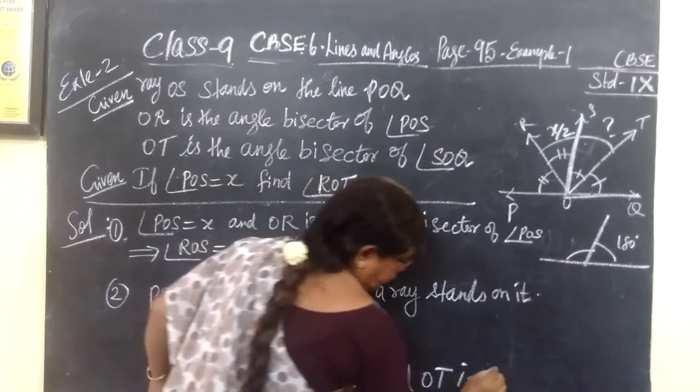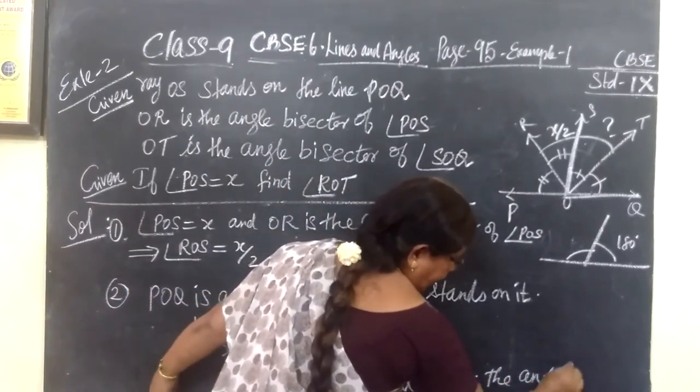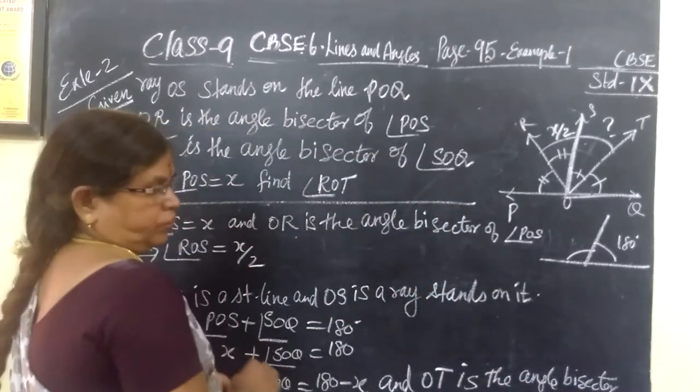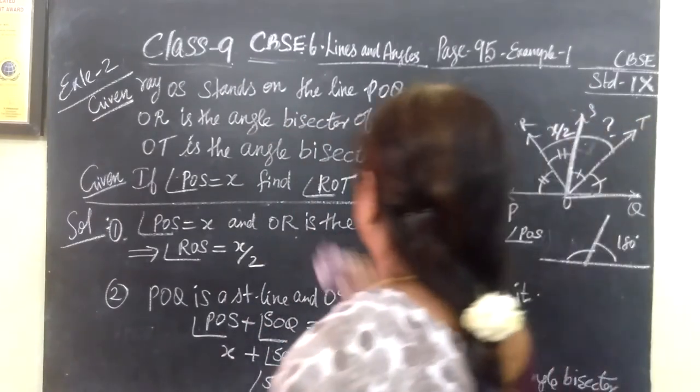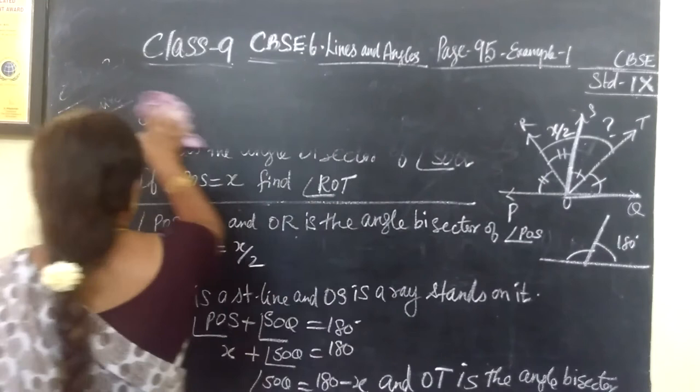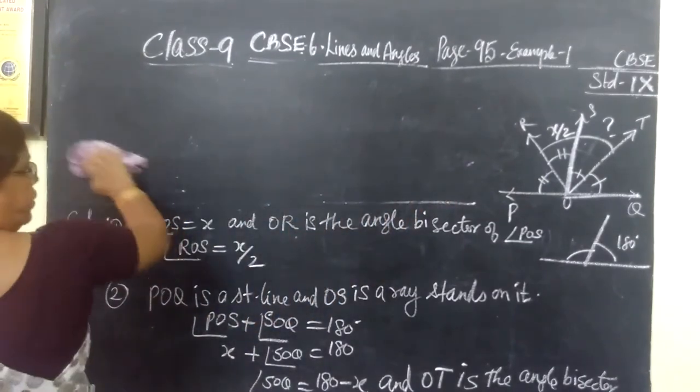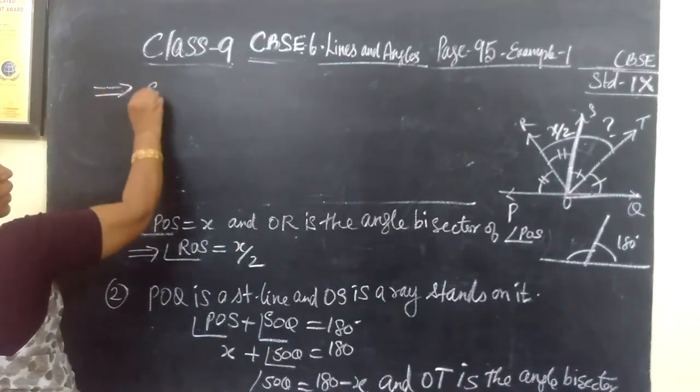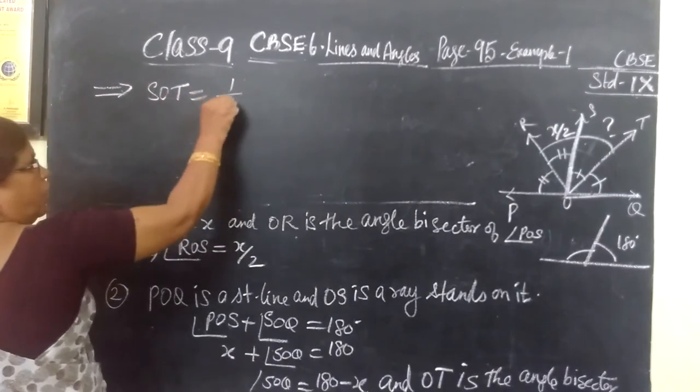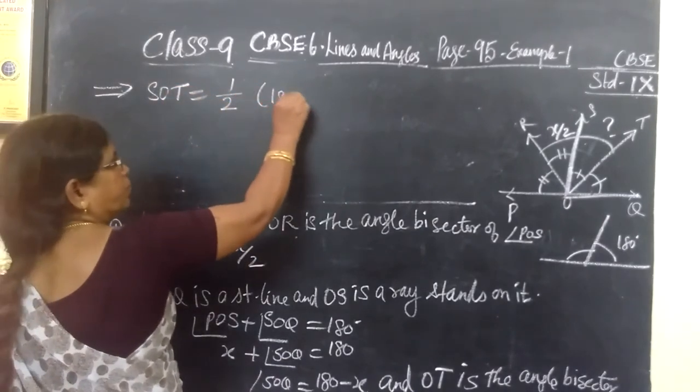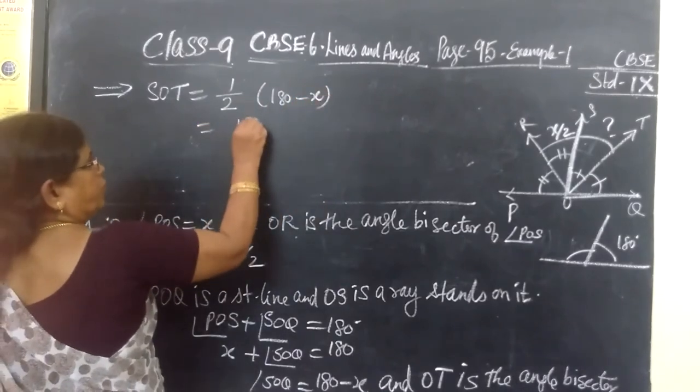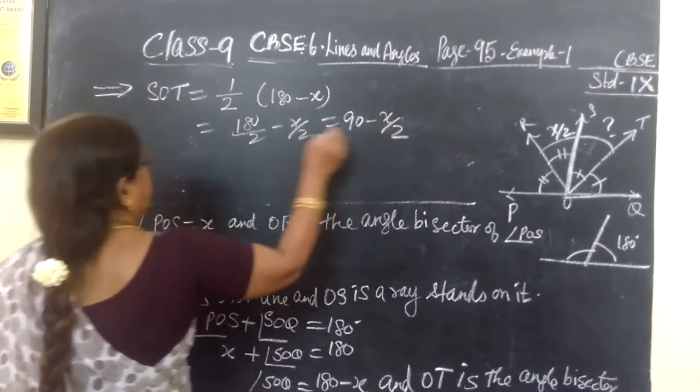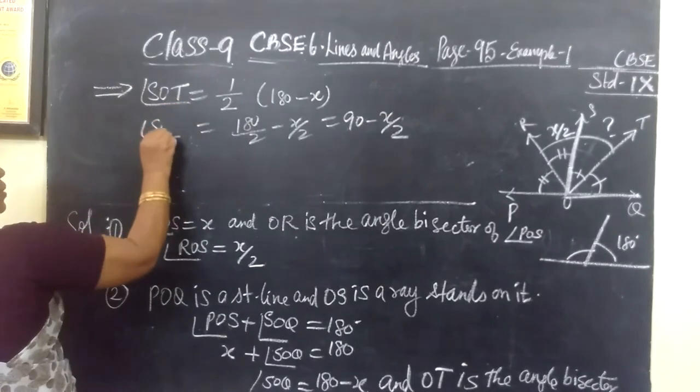And OT is the angle bisector. Angle bisector means it divides the full part into equal parts. So you know SOQ and angle bisector. So which implies, this implies SOT equal to half of 180 minus X. So equal to 180 by 2 minus X by 2, equal to 90 minus X by 2. This is angle SOT.